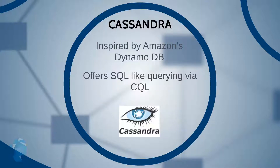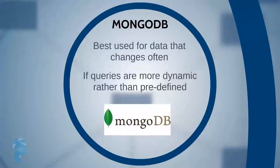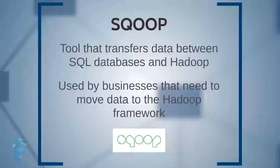CouchDB is another NoSQL database, best used for data that does not change often and on which predefined queries need to be run — for example, CRM data for a retailer. MongoDB is an alternative to CouchDB when your data changes very often and your queries are more dynamic rather than predefined.